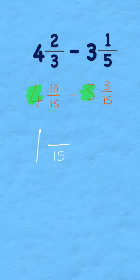How many do I have? I had 10 and I've subtracted 3. So I'm left with 7. So my answer is 1 and seven fifteenths.